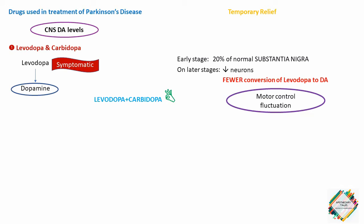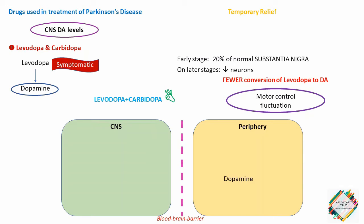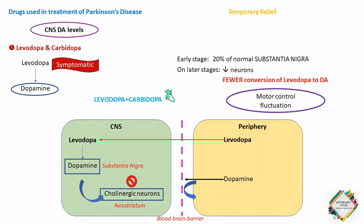Let's talk about the mechanism of action. Levodopa is the precursor of dopamine; dopamine as such does not cross the blood-brain barrier, but its immediate precursor levodopa is actively transported into the CNS and gets converted into dopamine. Levodopa must be administered with carbidopa.